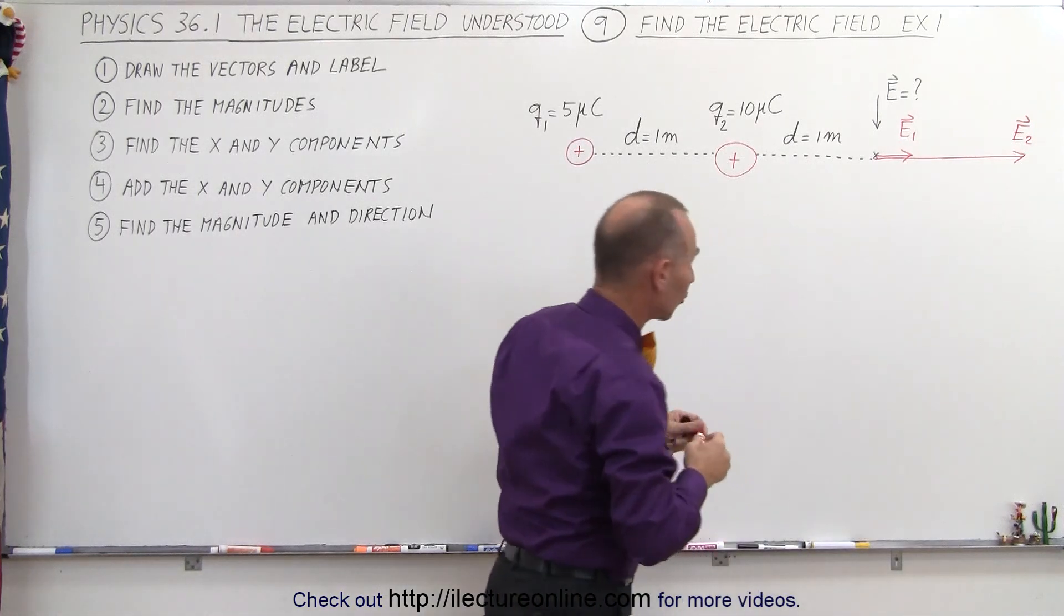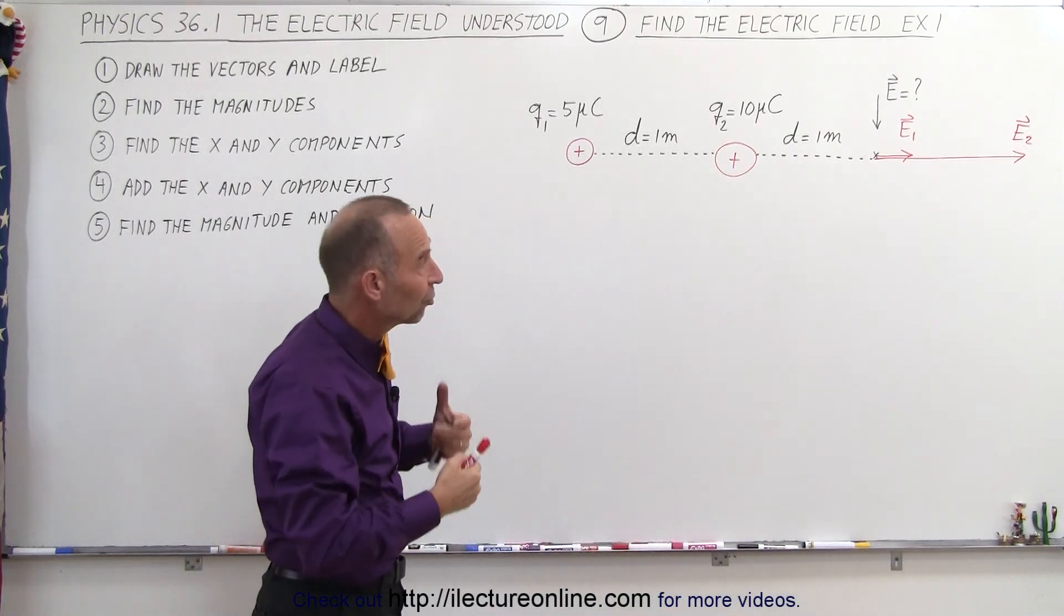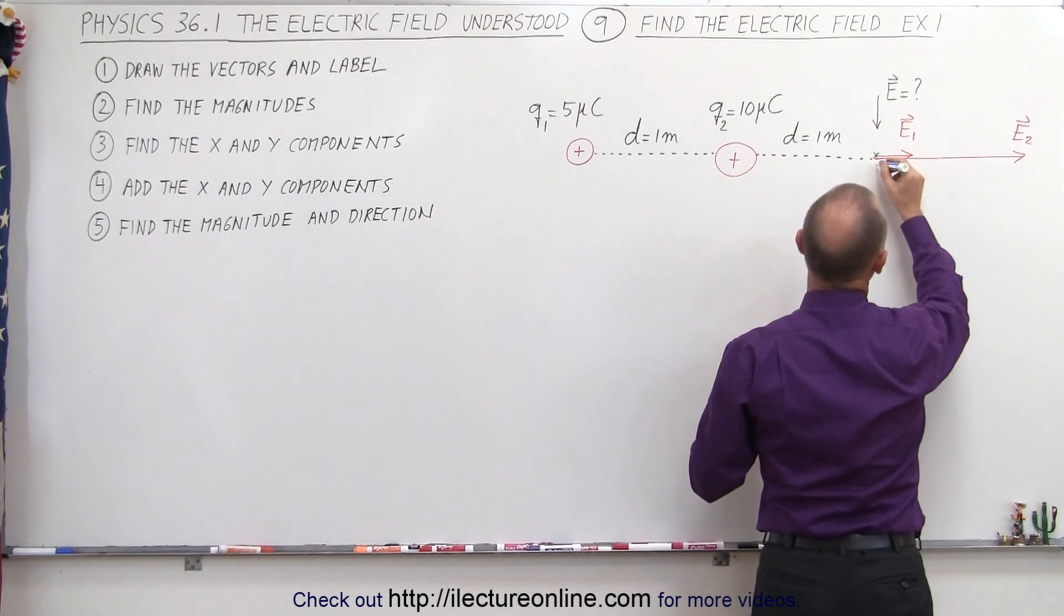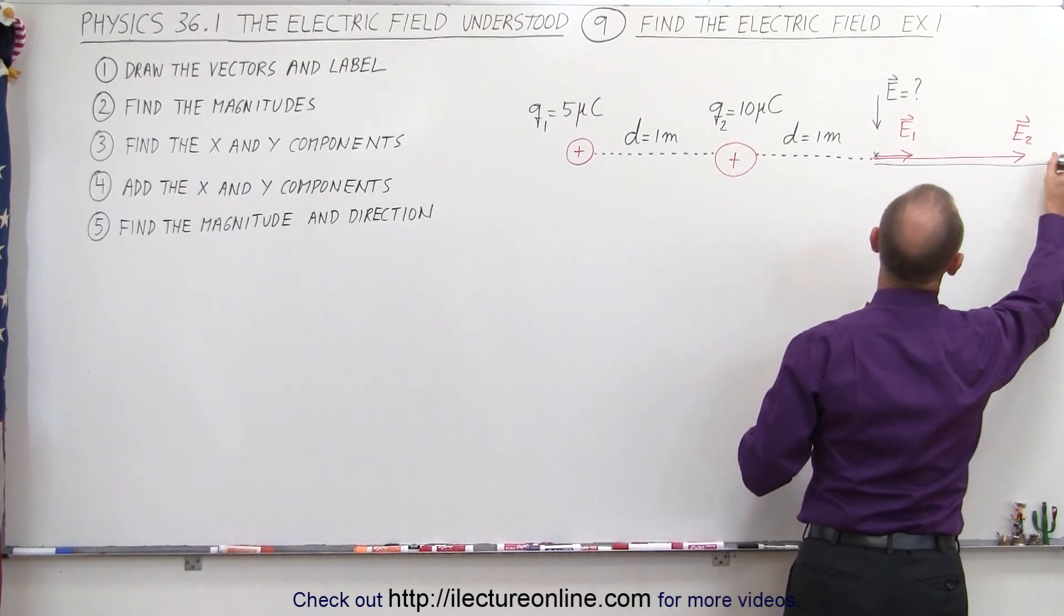So let's call that E two, and then notice those are the only two because there's only two charges, and then the sum will be the vector sum of those two. So the total electric field will simply be the sum of the two.